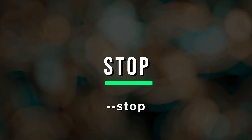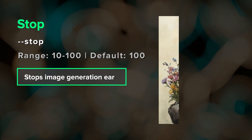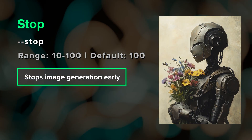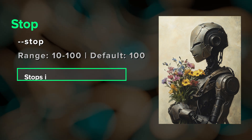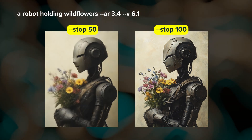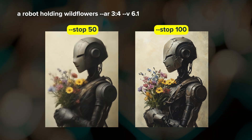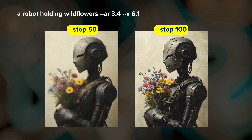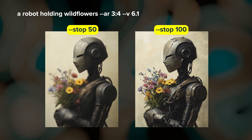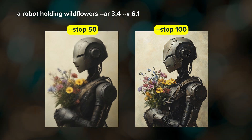The stop parameter lets you end image generation early. It takes values between 10 and 100. For example, adding --stop 50 means stop at 50% completion. This can be useful for when you want softer, more abstract results.